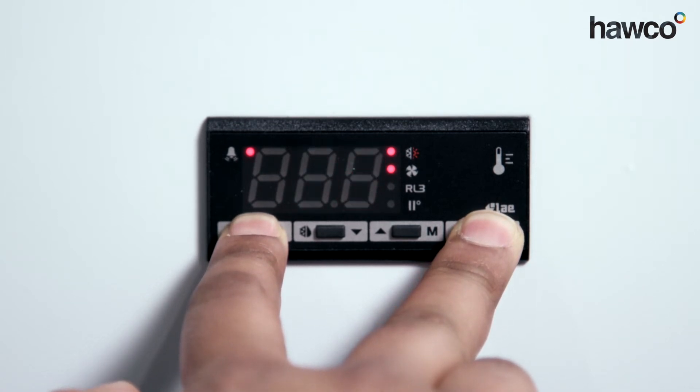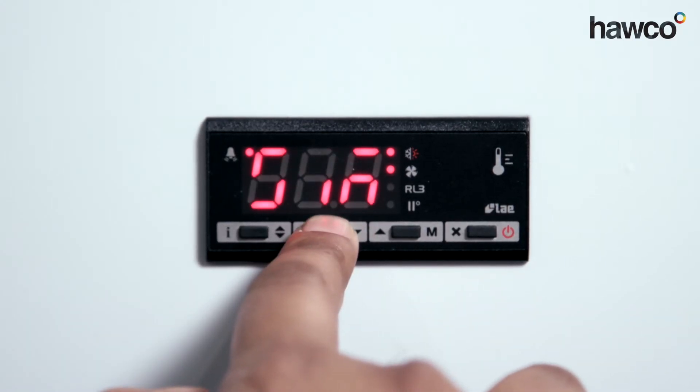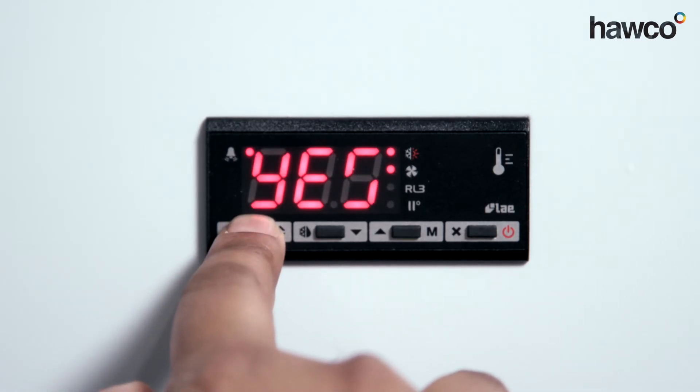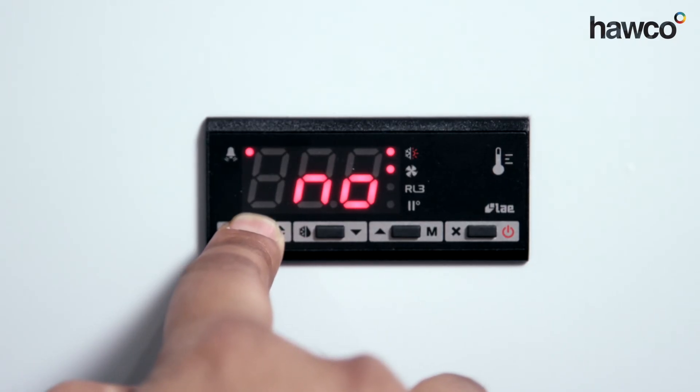So by holding two end buttons together, we enter the parameters. We scroll through till we find T2, push and hold the I button. You can see it says yes. We want it to say no, the second probe is not needed.